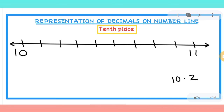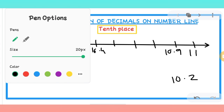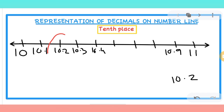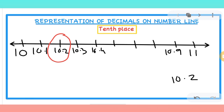The same way, we divide the segment between 10 and 11 into 10 equal divisions. These will be 10.1, 10.2, 10.3, 10.4, and so on up to 10.9. Since we have to represent 10.2, we mark the second division after 10. That is your 10.2. In this way we represent decimal numbers at the tenths place on the number line.